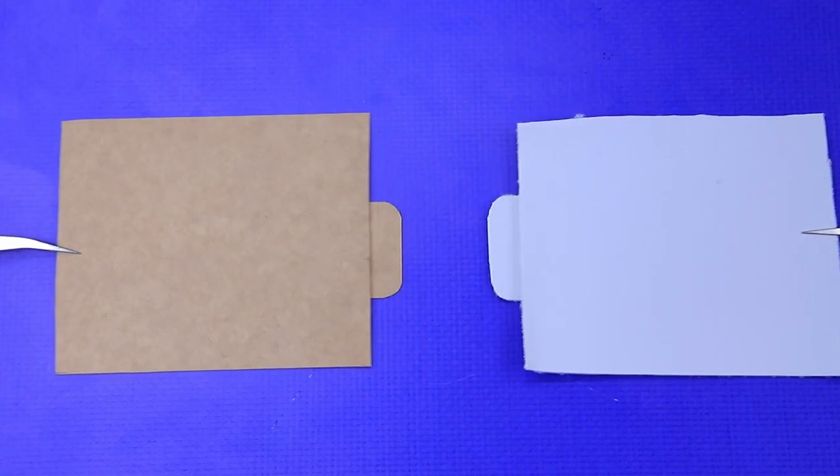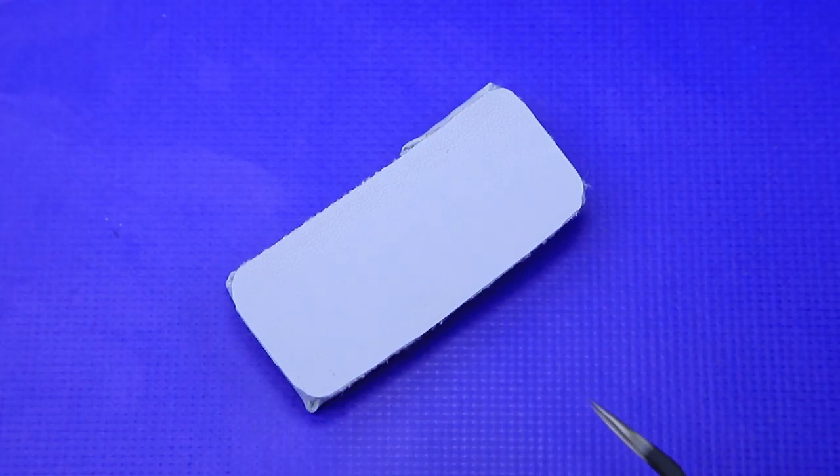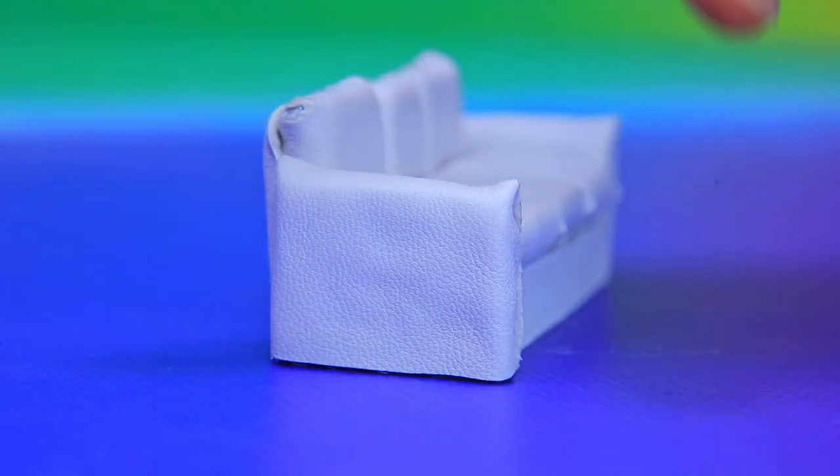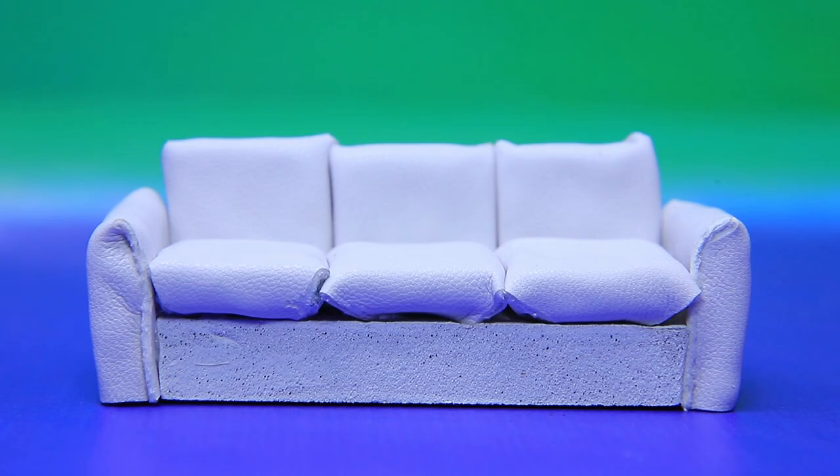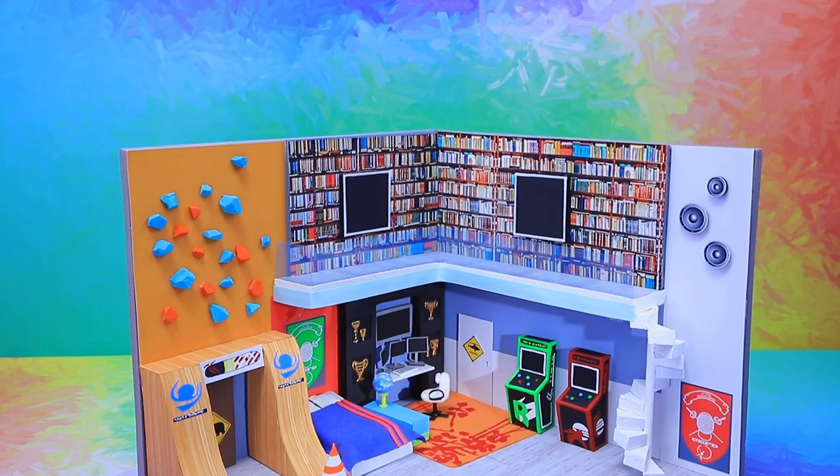Glue rows of pillows to a cardboard base. Add side panels. And comfortable armrests are ready. White couch for relaxation is in place.